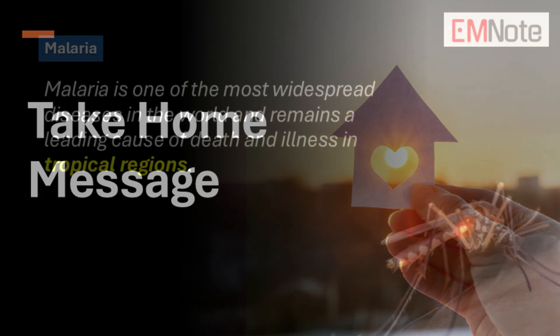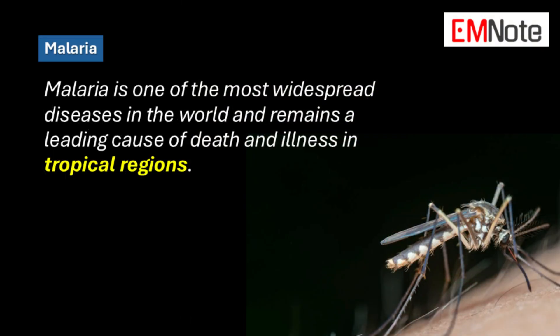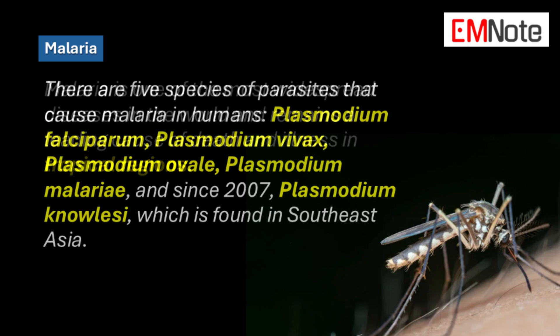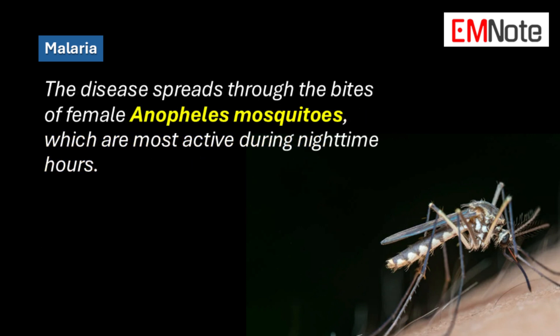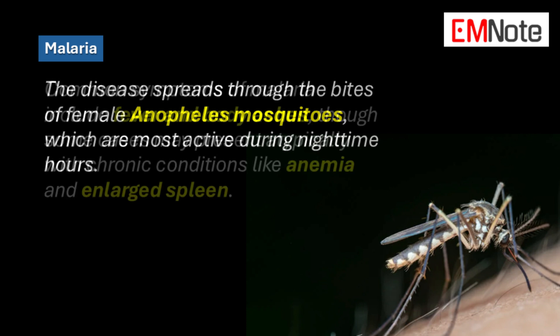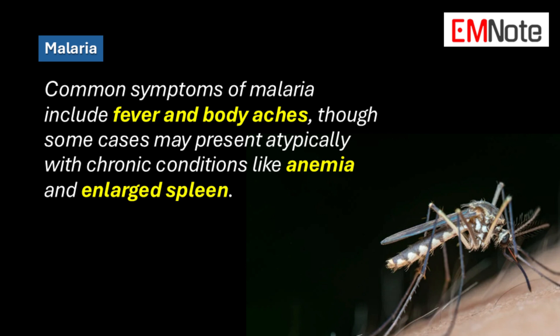Take-Home Message: Malaria is one of the most widespread diseases in the world and remains a leading cause of death and illness in tropical regions. There are five species of parasites that cause malaria in humans: Plasmodium falciparum, Plasmodium vivax, Plasmodium ovale, Plasmodium malariae, and since 2007, Plasmodium knowlesi, found in Southeast Asia. The disease spreads through the bites of female Anopheles mosquitoes, which are most active during nighttime hours. Common symptoms include fever and body aches, though some cases may present atypically with chronic conditions like anemia and enlarged spleen.